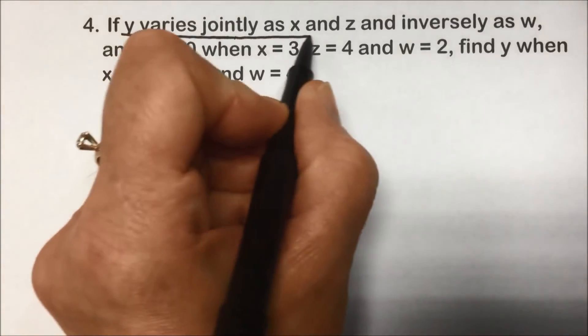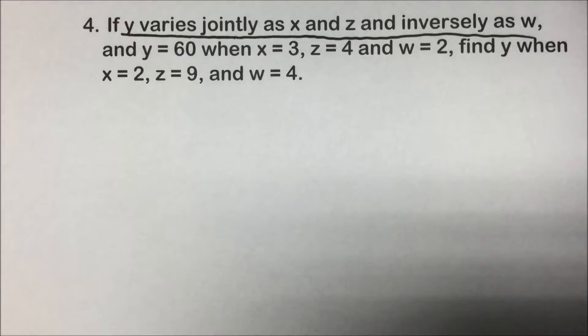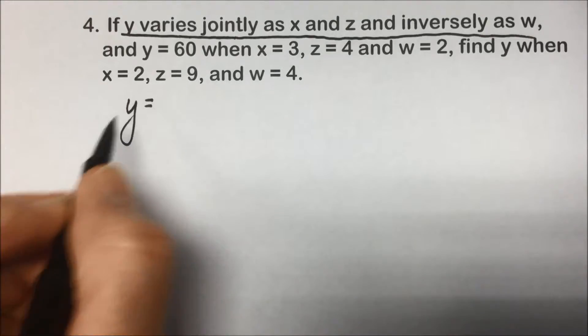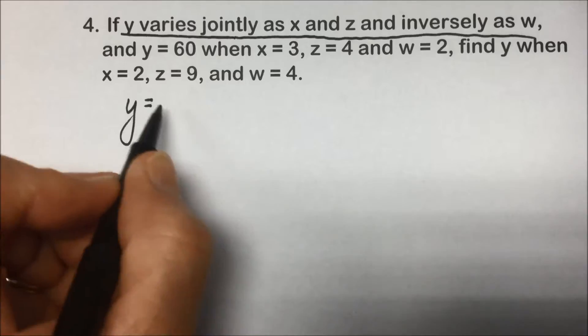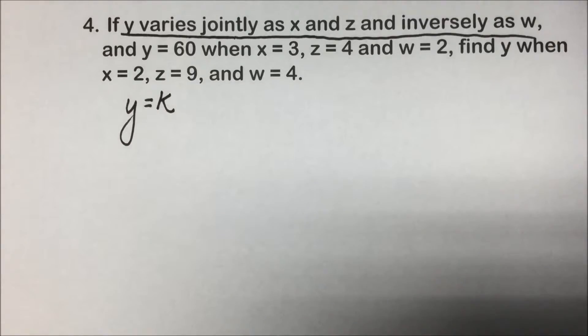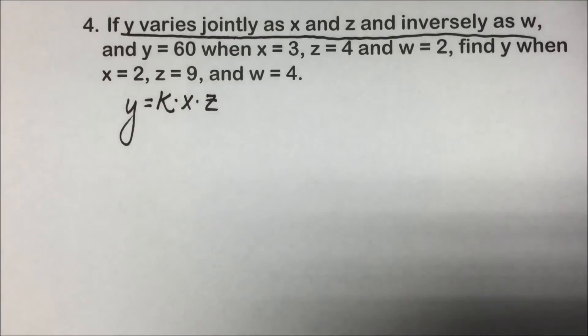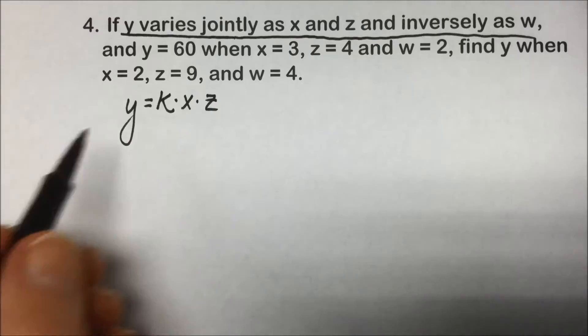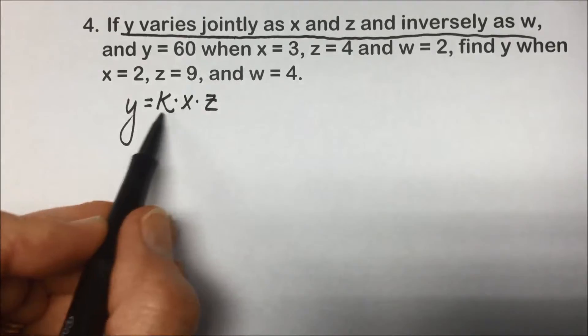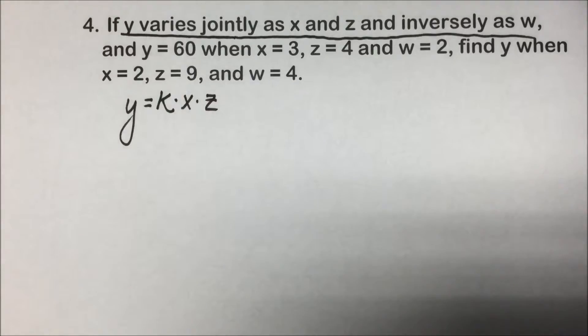The first thing we want to do is translate this relationship. It's telling us that Y varies jointly as X and Z. There's that silent constant of variation or proportionality as X and Z. This is similar to the example that I gave for area of a triangle is equal to something, that constant, times base times height, only we're leaving it generically with the variables here, Y, X, and Z.